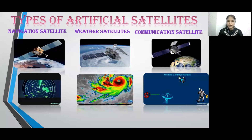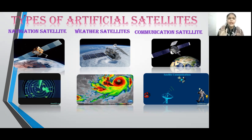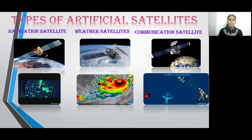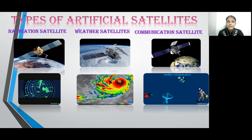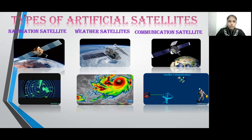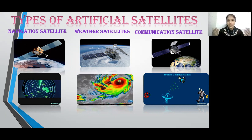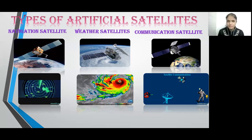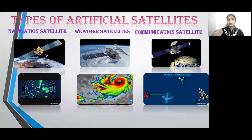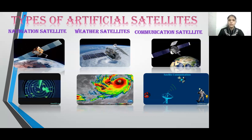Now let's look at the types of artificial satellites. Artificial satellites are divided into three categories: navigation satellites, weather satellites, and communication satellites. Navigation satellites — we use GPS and location services daily to find areas. Weather satellites make predictions and alerts about whether disasters will occur and monitor the climate conditions of a particular place. Communication satellites are very well-known — even for a single phone call we use satellites.